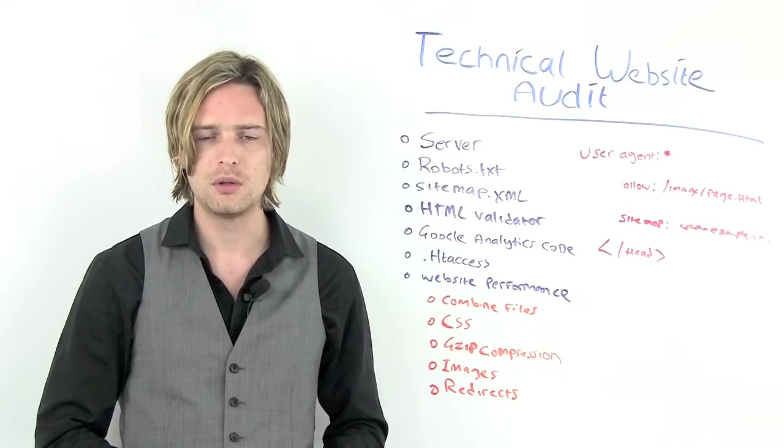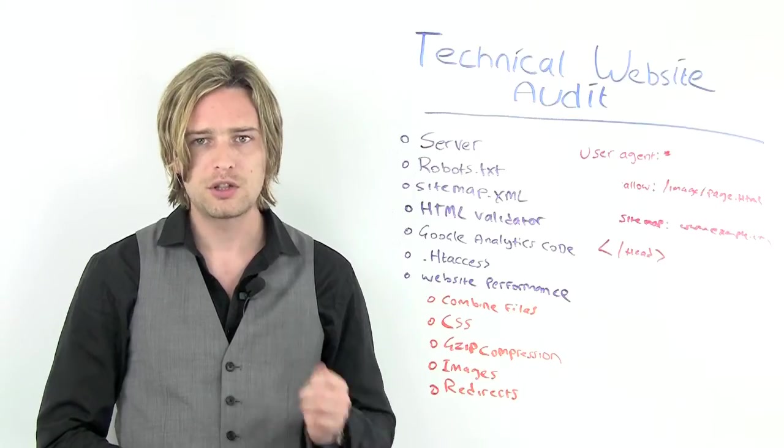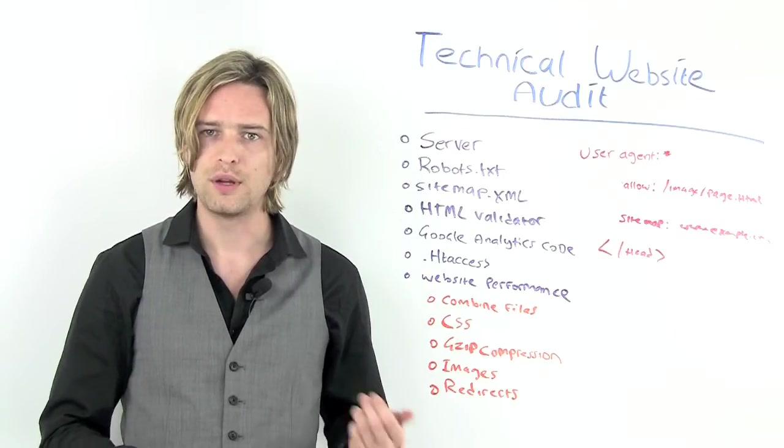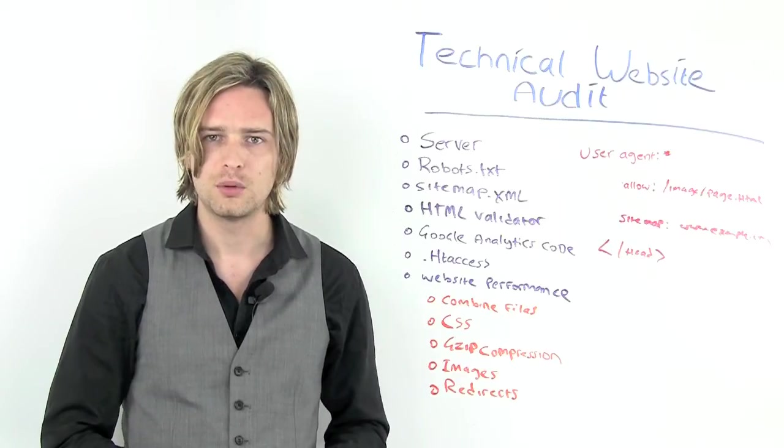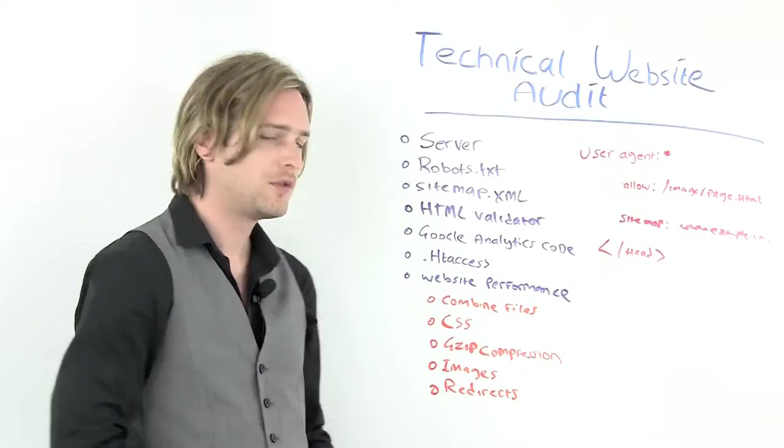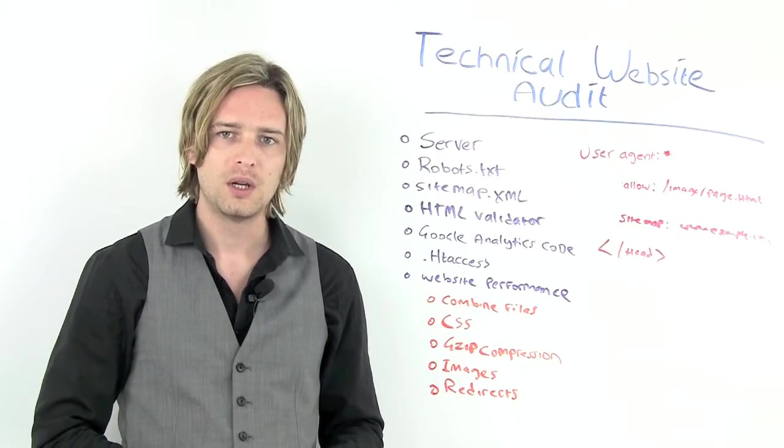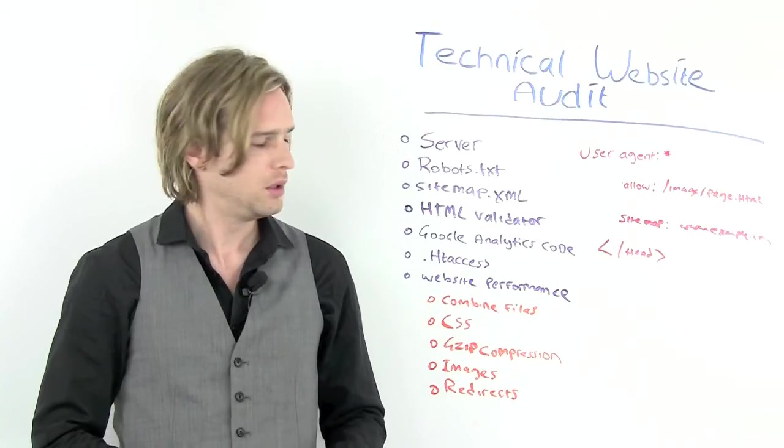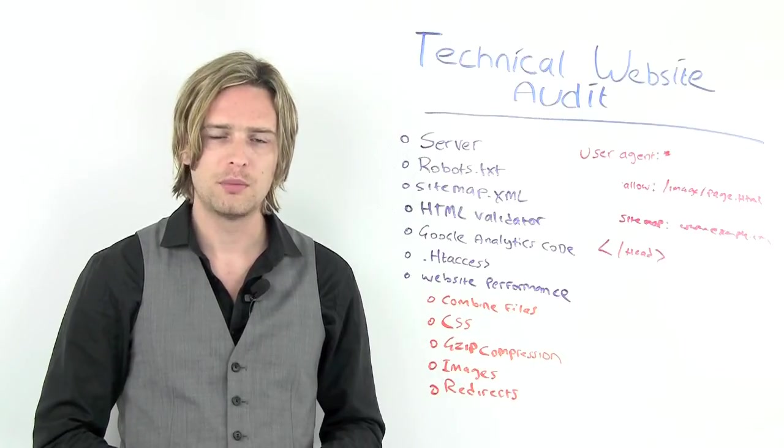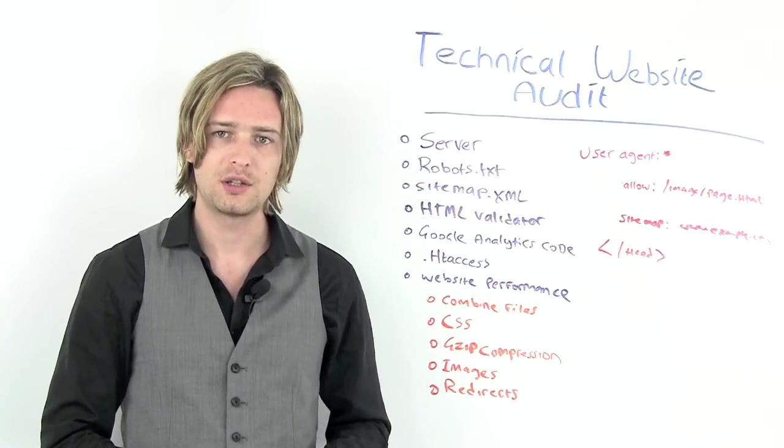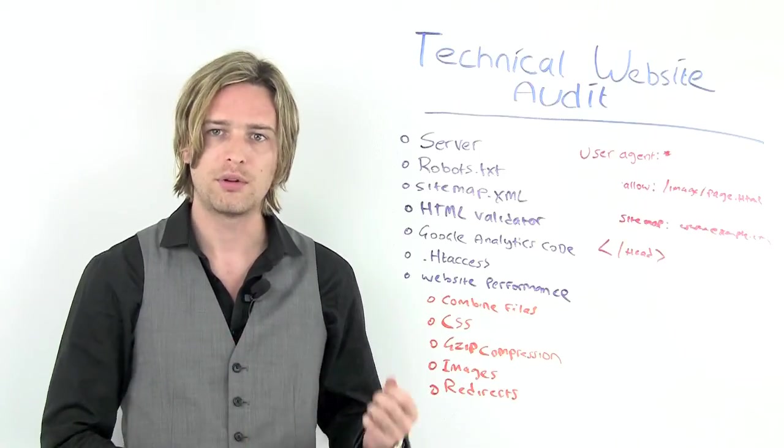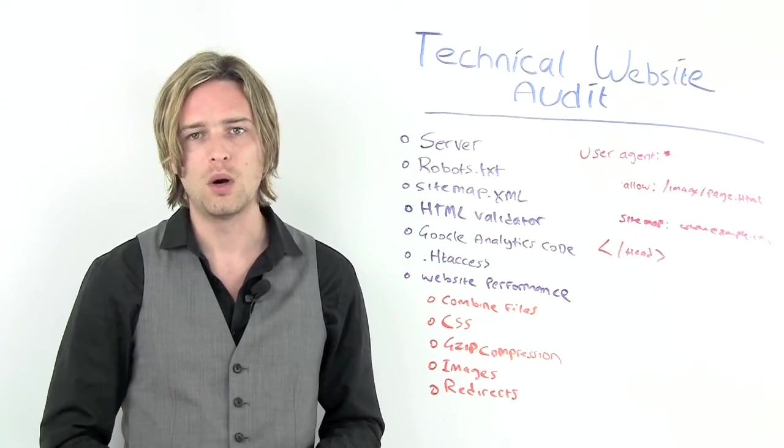This is important because Google have got better at identifying canonical issues, but it's still possible where you get an entire website indexed with and without the www, and as a result, Google thinks there's duplicate content there. To avoid this, you can use the .htaccess file. The code for this will be in the transcript of the video. Making the file is very easy. You just open up a text document using a text editor, as with the robots file, and save it as .htaccess rather than .txt. The entire file name is just .htaccess. There's no prefix to the dot.